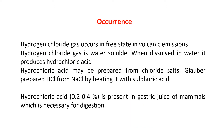Occurrence of hydrogen chloride gas: hydrogen chloride gas occurs in free state in volcanic emissions. Hydrogen chloride gas is water soluble. When dissolved in water it produces hydrochloric acid. Hydrochloric acid may be prepared from chloride salts. Glover prepared HCl from NaCl by heating it with sulfuric acid. Hydrochloric acid is present in gastric juices of mammals in a very low quantity, that is 0.2 to 0.4 percent, which is necessary for digestion.